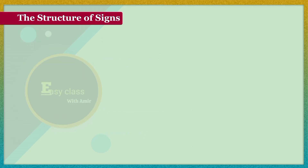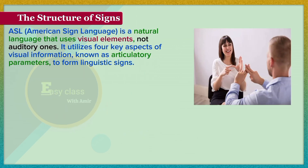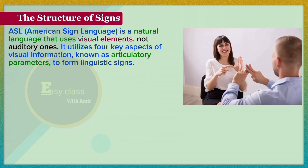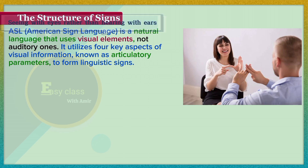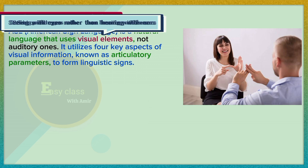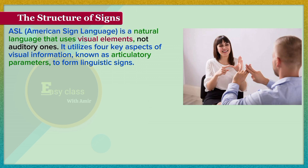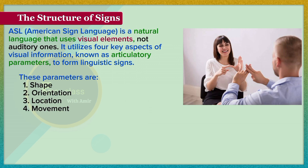ASL is a natural language that uses visual elements, not auditory ones. It utilizes four key aspects of visual information, known as articulatory parameters, to form linguistic signs. These parameters are: one, shape; two, orientation; three, location; four, movement.